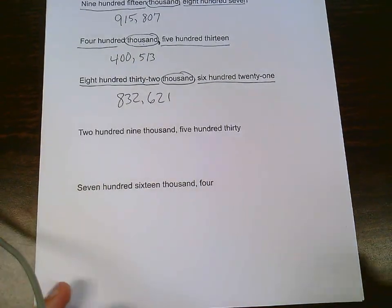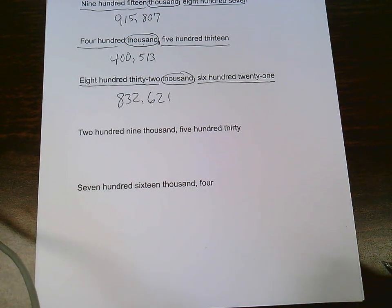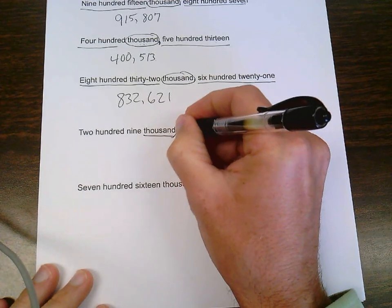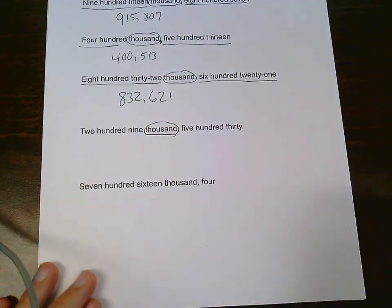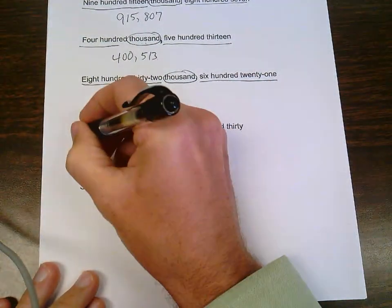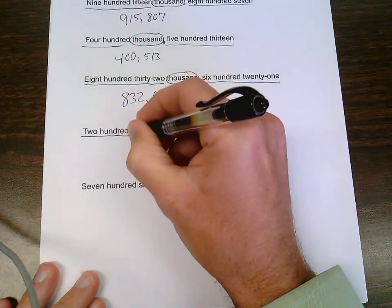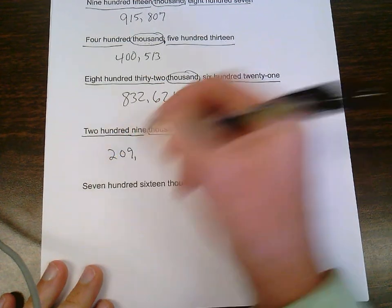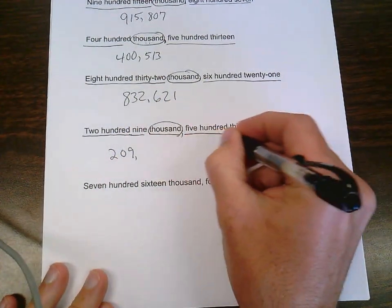Next one down, 209,530. Look at the word in front of the comma, thousand. Everything ahead of that will be in the thousand period, 209, comma, 530.